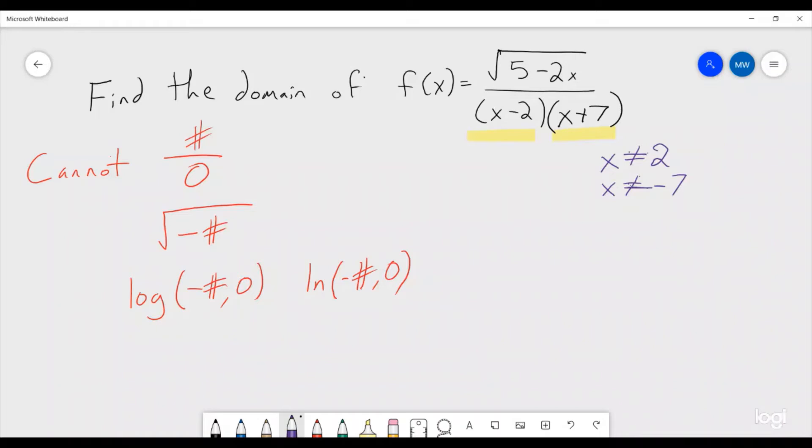Now the other piece is we also have a square root that's showing up. So that means we need 5 minus 2x to always be greater than or equal to 0. How can we go through and solve this? Well we can add 2x to both sides. We get 5 has to be greater than or equal to 2x, and we can divide both sides by 2 and say that 5 halves has to be greater than or equal to x.